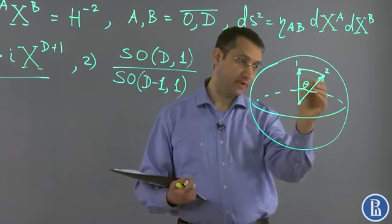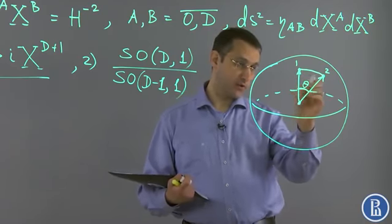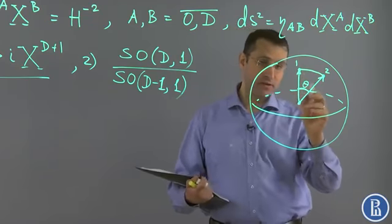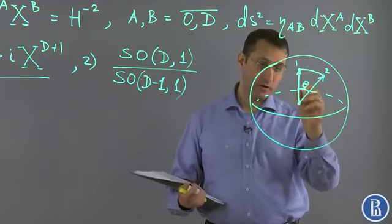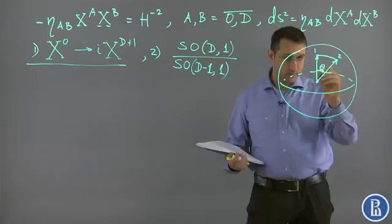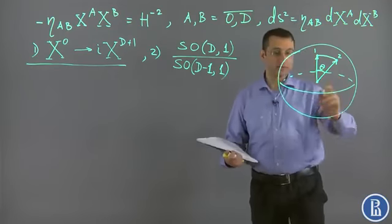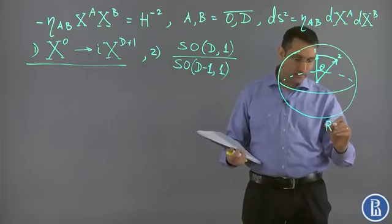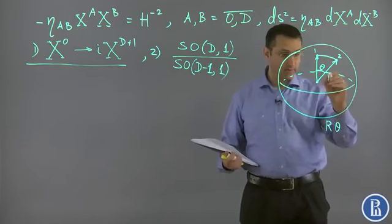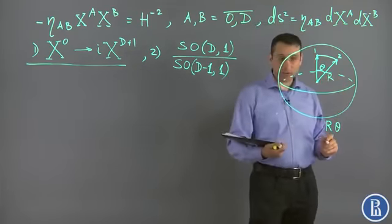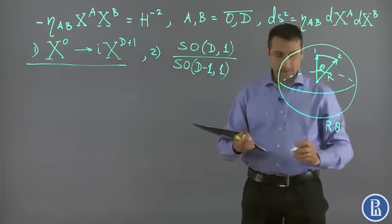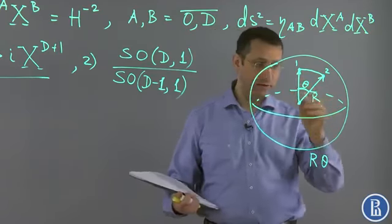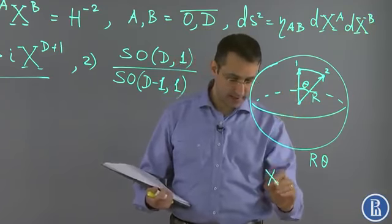The distance is just this angle measured in radians times r. So the geodesic distance is just r theta where r is the radius. But how do we define this distance? We take two points.